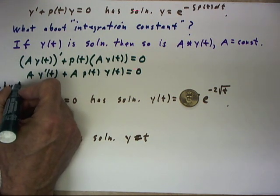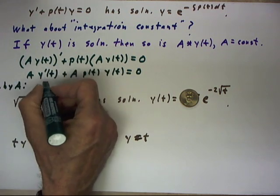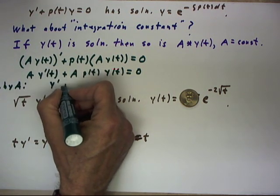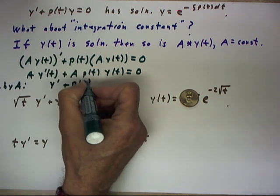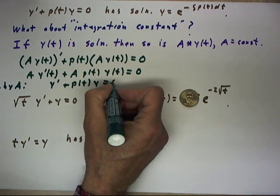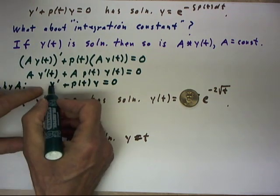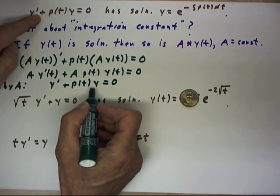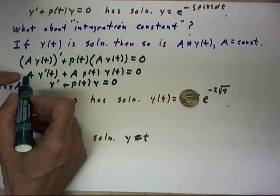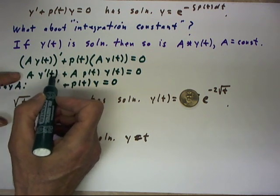If we divide through by A, we get y' + p(t)y = 0, which is our original equation. And if y is a solution to this equation, then so was A times the y function.